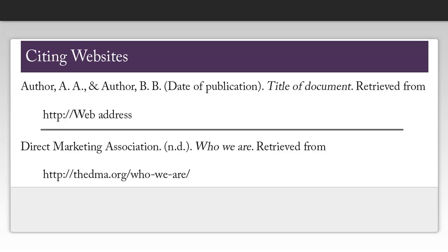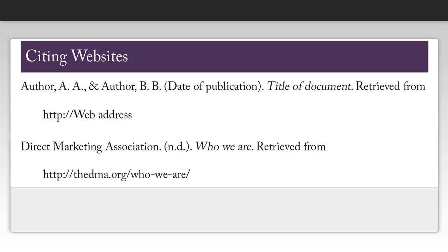Now we can create our citation. If you have a corporate author, you'll want to capitalize every word of their name and avoid using the short form — in this case DMA. If you don't have an author, you're going to put the name of the webpage first, then the date, and then the link. Because I didn't have a date for this particular page, I just put ND for no date.